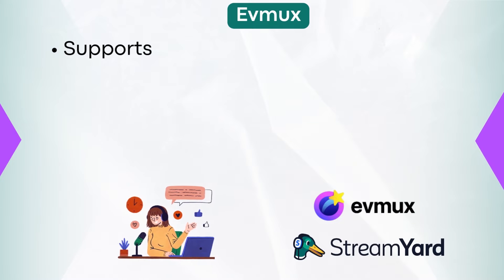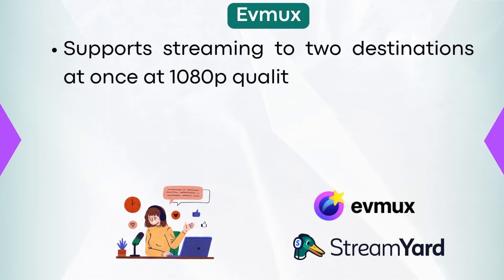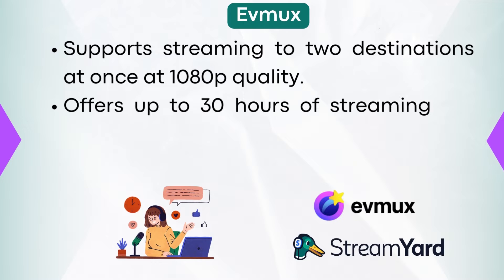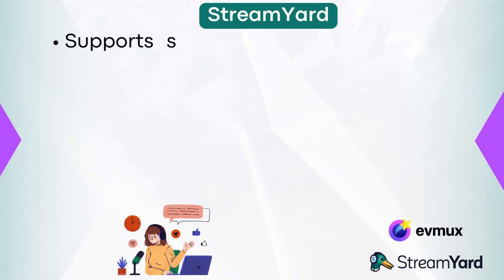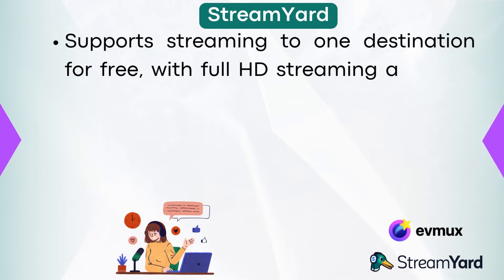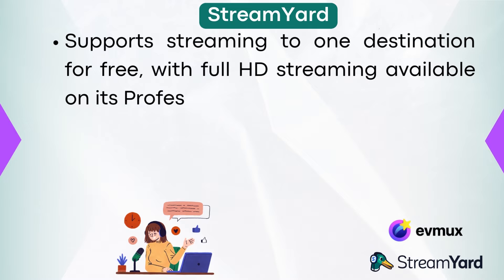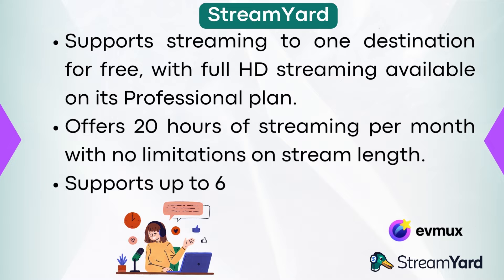EVMux supports streaming to two destinations at once at 1080p quality, offers up to 30 hours of streaming per month with a limit of two hours per stream, and supports up to 12 free attendees. StreamYard supports streaming to one destination for free, with full HD streaming available on its professional plan, offers 20 hours of streaming per month with no limitations on stream length, and supports up to six free attendees.